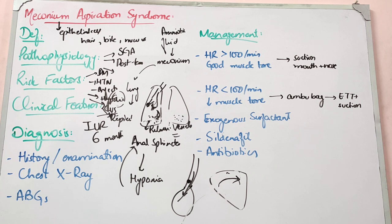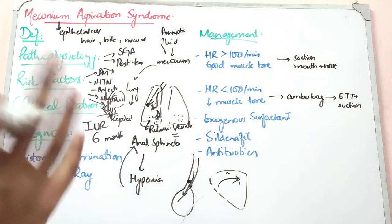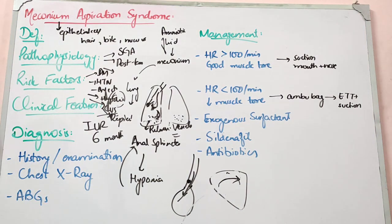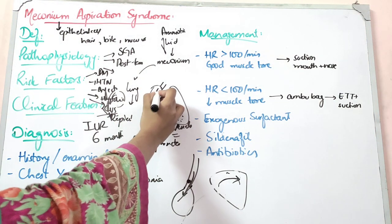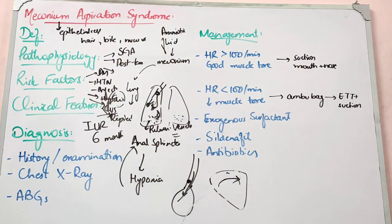The consistency of meconium is very important. If the meconium is thin and settles in the distal airways, it will not cause an immediate emergency but will cause pneumonia. However, thick meconium — described as pea soup consistency — that lodges in the major airways causes severe, immediate obstruction, which can be life-threatening.